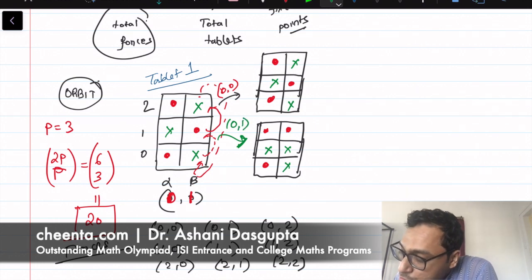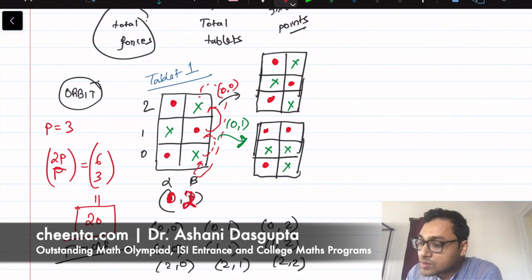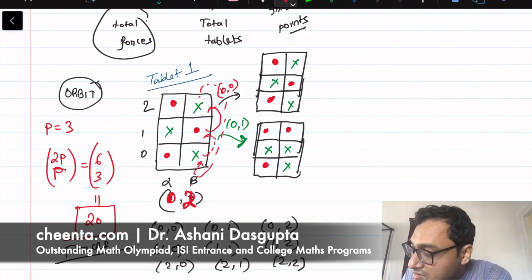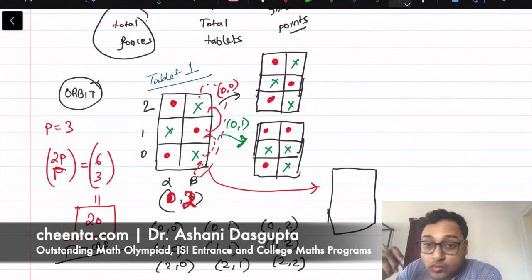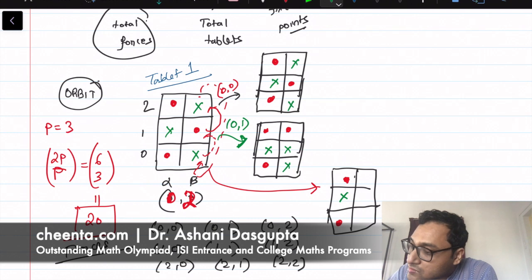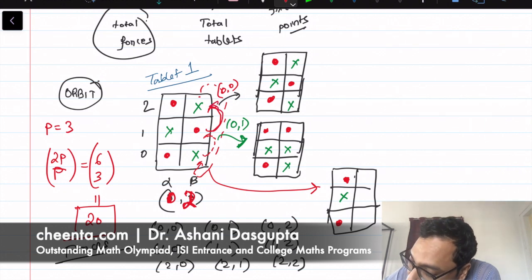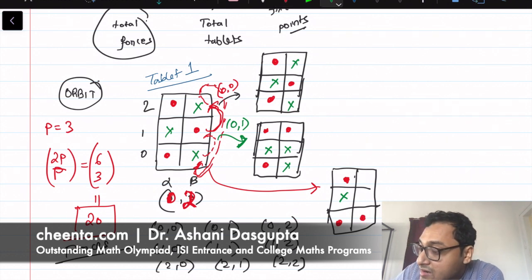What happens when I plug in (0,2) instead of (0,1)? The first column remains the same — every block goes 0 units up, so it doesn't go anywhere. The second column: you go two units, hopping around two units. The dot goes here, and the crosses take up the remaining two slots. So this is the (0,2) case.